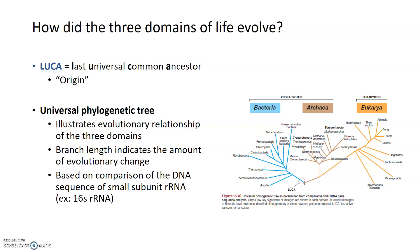Universal phylogenetic trees are generated by comparing DNA sequences — not a comparison of the entire genome, mostly because at the time this was being created it was too expensive and would take too long. So scientists found a way to choose a small piece of DNA, a specific gene that all of these organisms have, and look within that gene for sequence differences.